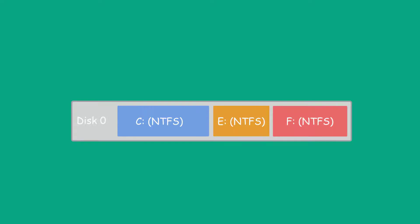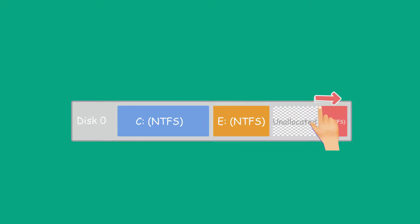You need to long press the left side of the F partition to the right to get the unallocated space of the corresponding size.